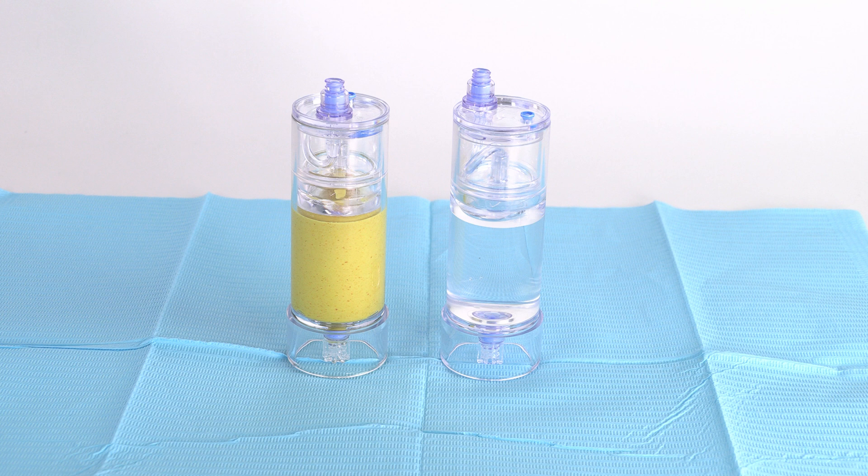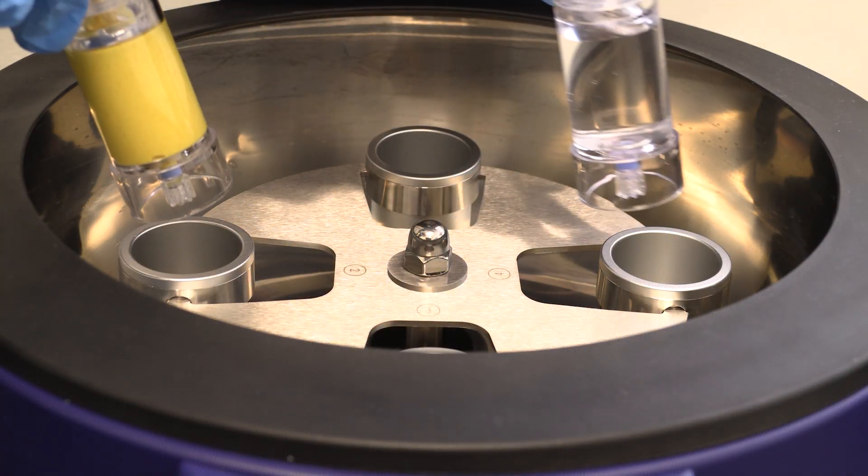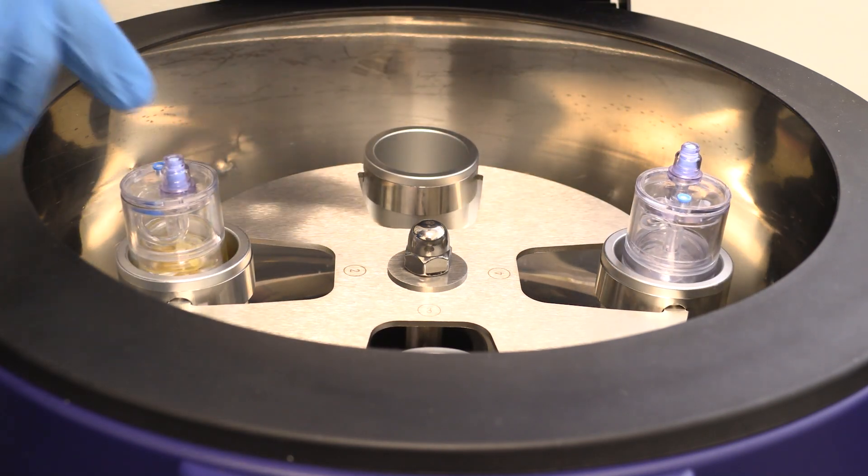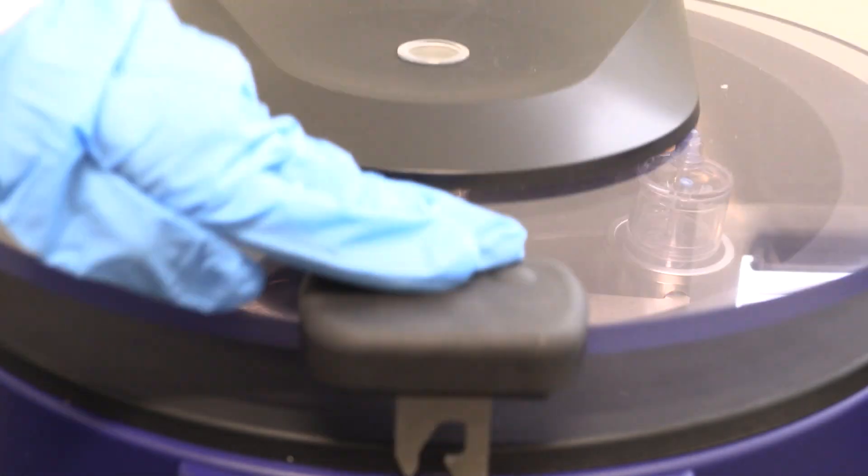Counterbalance the device and place them in the centrifuge buckets at opposite ends. Follow the protocol settings provided in the Progenikine IFU insert.